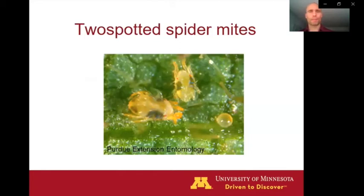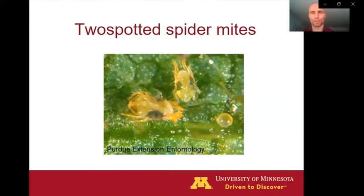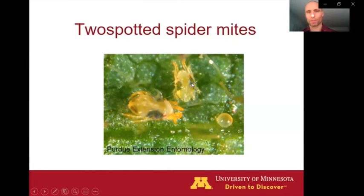Shifting gears again here, let's talk about a different arthropod — not an insect this time. This is a mite, the two-spotted spider mite. We can see a picture of two mites, and we can actually see one of the eggs of the spider mites here. These are called two-spotted spider mites, and you can obviously see why they get that name with the two dark spots on the sides of their bodies.